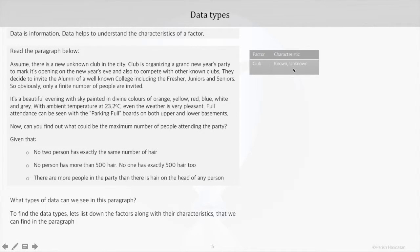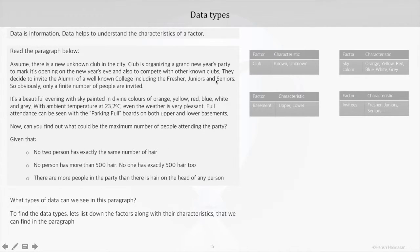First we see in reference to club, its characteristic has been described as known and unknown. Then we find the colors of the sky described as orange, yellow, red, blue, etc. We see the basement being classified as upper and lower. We see invitees categorized as freshers, juniors, and seniors. Then we can see the ambient temperature at 23.2 degrees Celsius. We also see a reference to the number 500. Now a simple quality-based categorization like these two columns here is called nominal data, and this can be binary and non-binary.